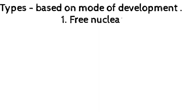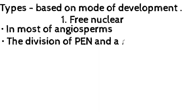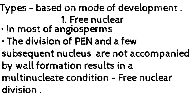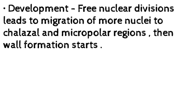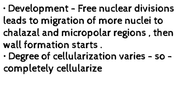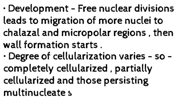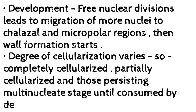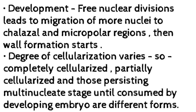Types of endosperm based on mode of development. First: Free nuclear endosperm — in most angiosperms, the division of PEN and a few subsequent nuclei are not accompanied by wall formation, resulting in a multi-nucleate condition known as free nuclear division. Free nuclear divisions lead to migration of more nuclei to the chalazal and micropylar regions, then wall formation starts. The degree of cellularization varies — completely cellularized, partially cellularized, or persisting in multi-nucleate stage until consumed by the developing embryo. Examples: Crotalaria, Grevillea, Cocos nucifera, and Lomatia.